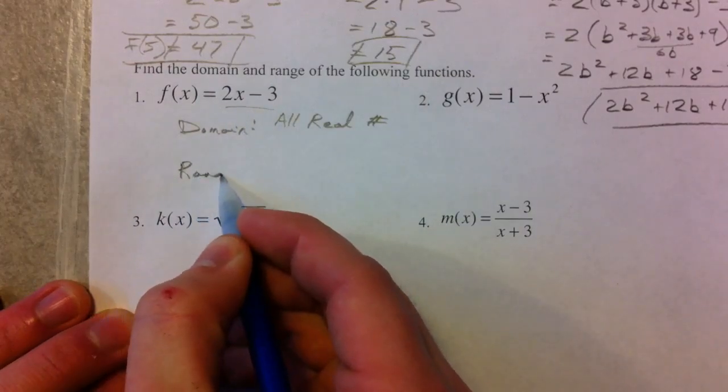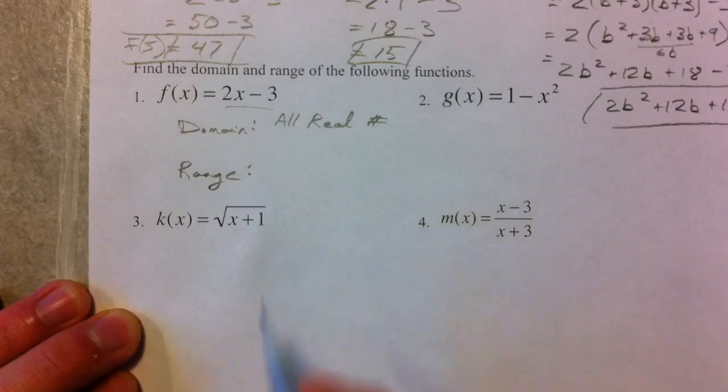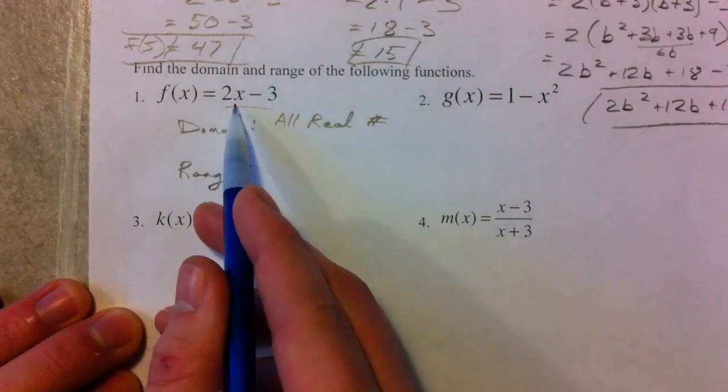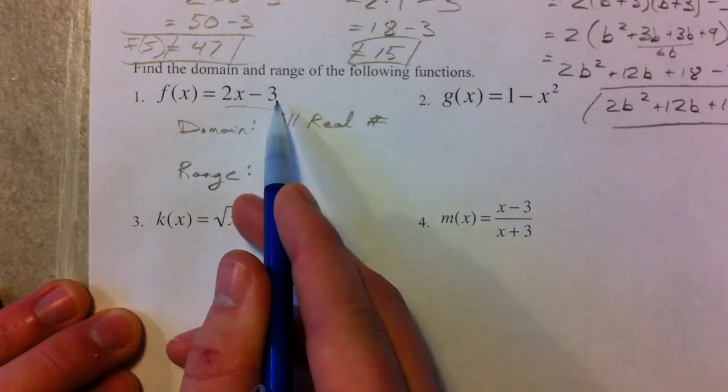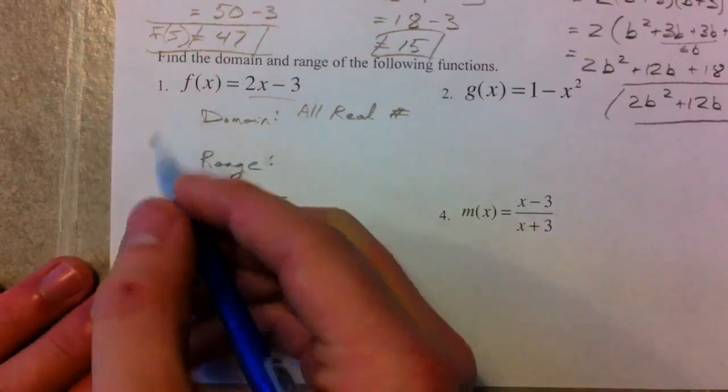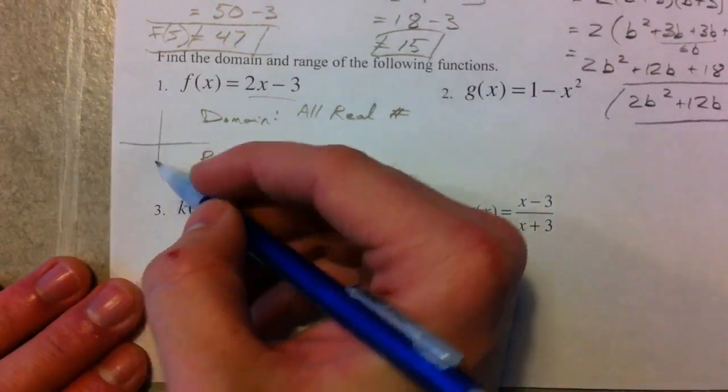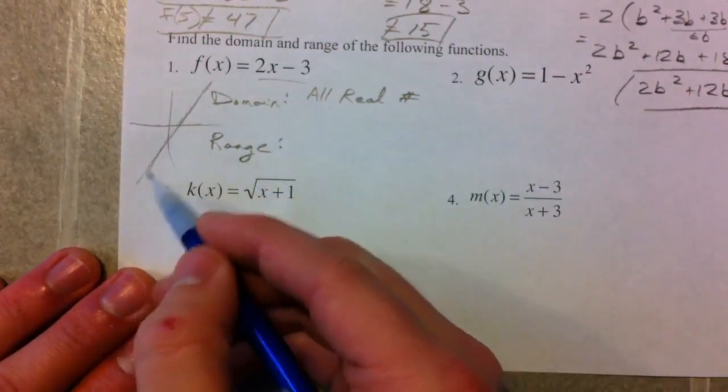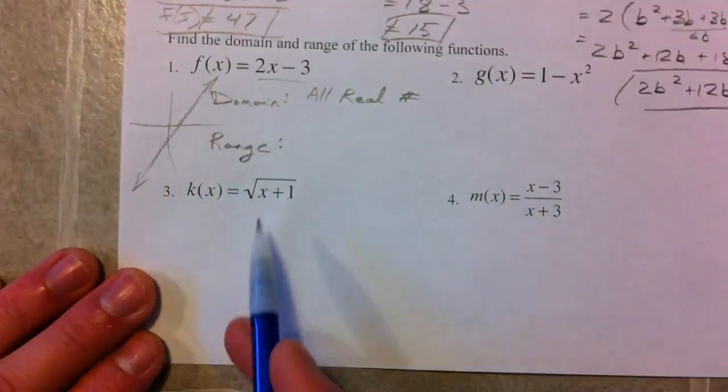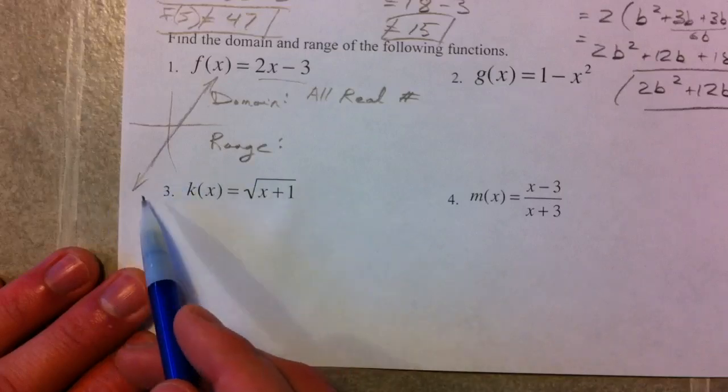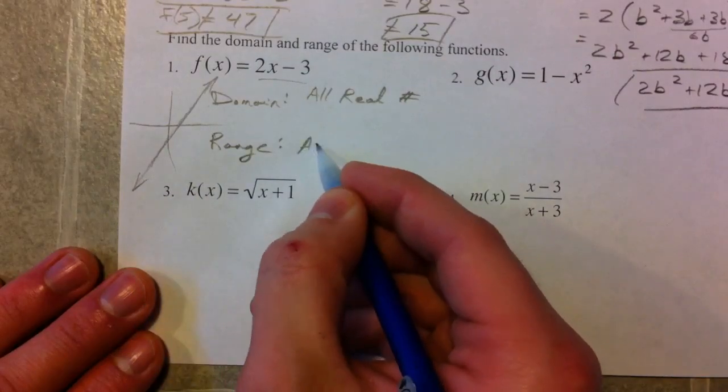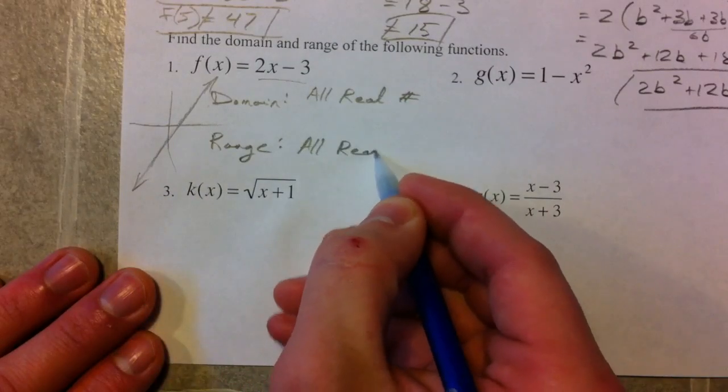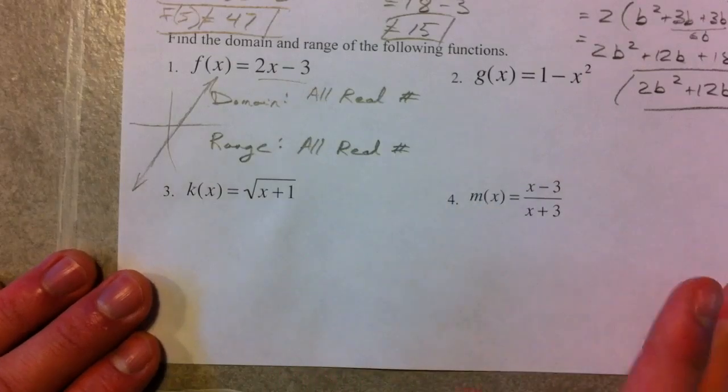And range, you have to think about what the y value comes out as. This is a line, slope of 2, y-intercept of negative 3, and so if you think about what the graph might look like real quick, it's going to look like this. So it's going to keep going forever and ever in this direction, forever and ever in this direction, and so you can tell the domain and the range is also all real numbers. It's going to change in these other ones.